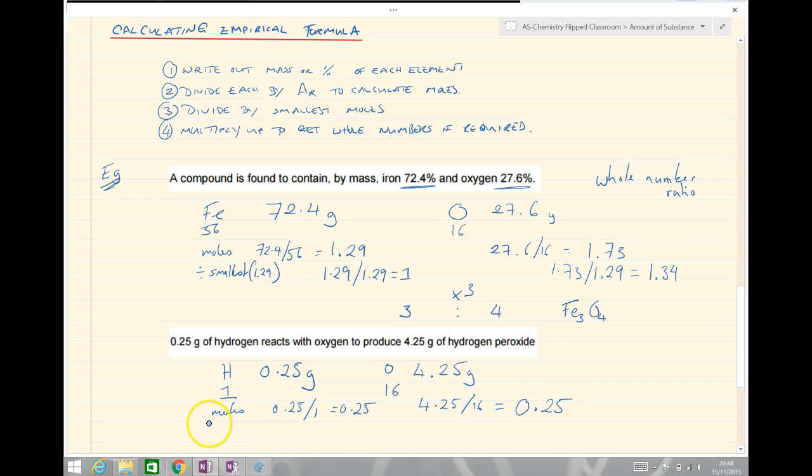They're both the smallest number so we're going to divide by the smallest, which in this case is 0.25 over 0.25 equals 1 and 0.25 over 0.25 which is 1 again. So, our empirical formula in this instance is HO. Notice that this is empirical formula, the simplest whole number ratio. It's not actually the molecular formula for hydrogen peroxide. The molecular formula is H2O2, so the simplest ratio is HO.